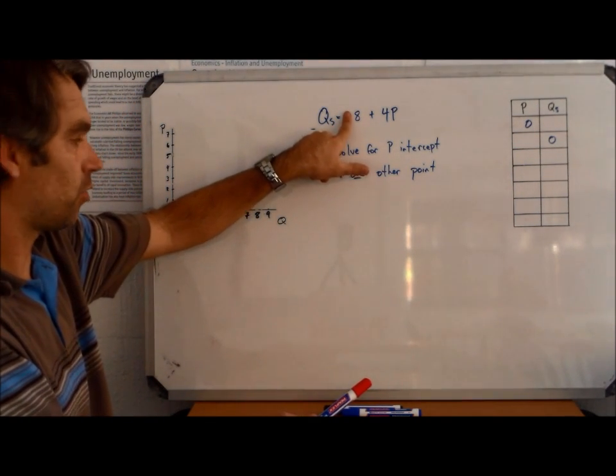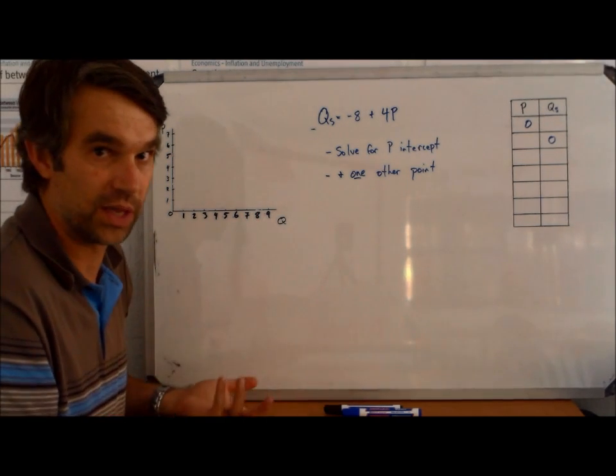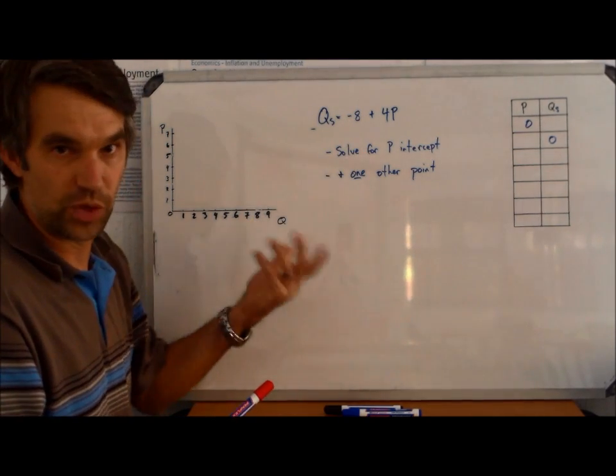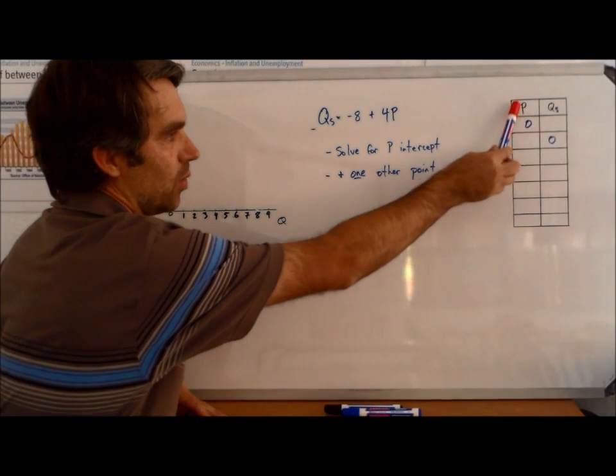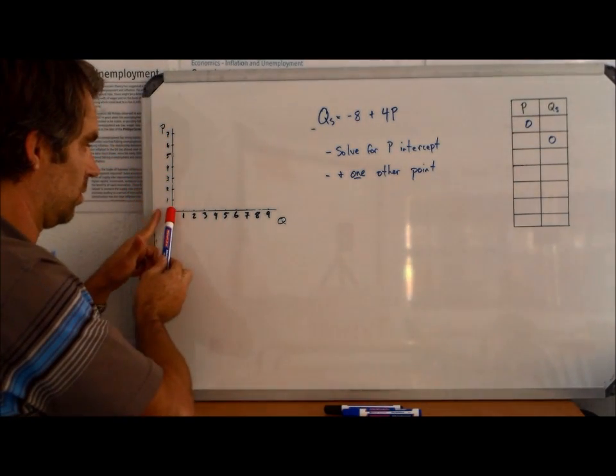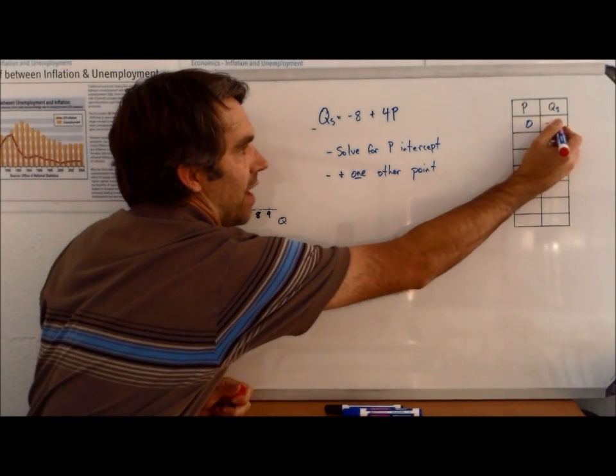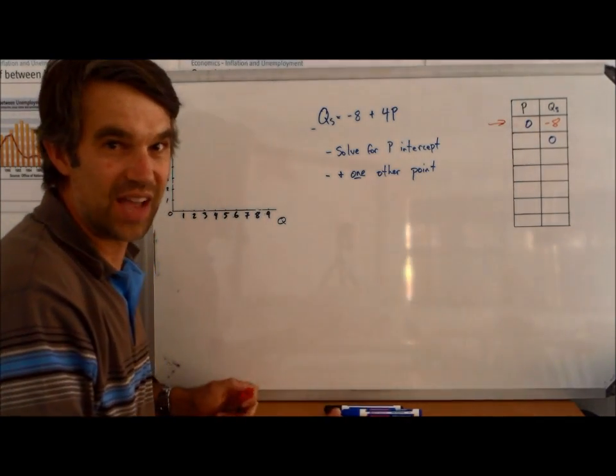So for example, if this was Qs equals 8 plus 4P, we could just go right here to 8, and that's one of our points. We don't really have to solve anything. Here, however, because it's negative, we do need to solve for it. Remember what we're saying is that when price is 0, well, this would be back here at negative 8 somewhere. But because we can't graph negative 8, this point, it's not really valid, it doesn't really work.